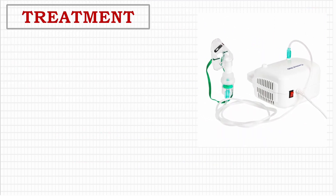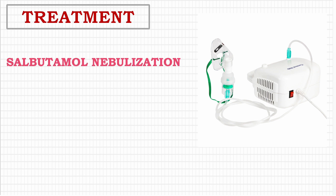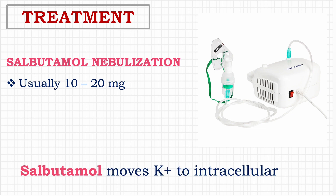Also consider giving 10 to 20 mg of nebulized salbutamol, which can provide an additive effect to insulin-dextrose in driving potassium into cells. This should only be given as adjuvant therapy to insulin-dextrose, never as monotherapy. Note that salbutamol carries a small risk of precipitating angina in patients with ischemic heart disease, particularly if they are tachycardic.